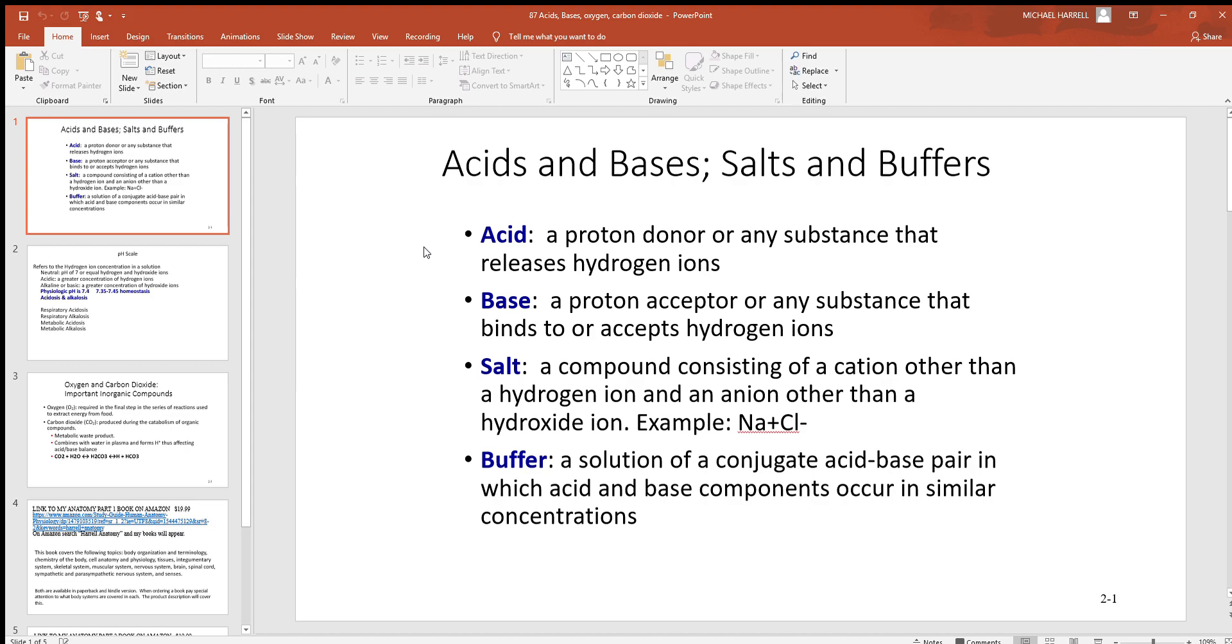Well, think about if you take hydrogen—it's the first element on the periodic table. It's got one proton, one electron. If it becomes a hydrogen ion, that happens when it loses the electron, so the only thing left is the proton. That's why you often hear hydrogen ions called protons, and acids are proton donors because they tend to donate or release hydrogen ions in solution. Bases are exactly the opposite: a proton acceptor or any substance that binds to or accepts hydrogen ions.